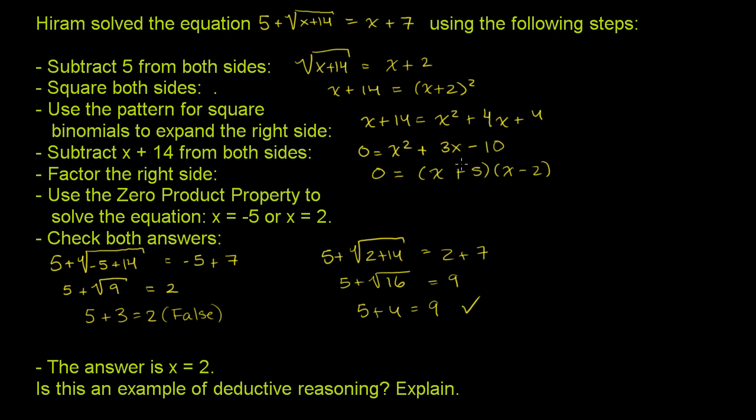Then he factored the right-hand side. Let's see, 5 times negative 2 is negative 10. 5 plus negative 2 is 3. That makes sense.